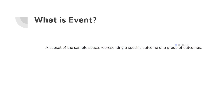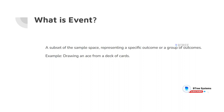The event is a subset of a sample space representing a specific outcome or group of outcomes. For example, drawing an ace from a deck of cards — there are 52 cards in a deck and 4 aces. That is your event.